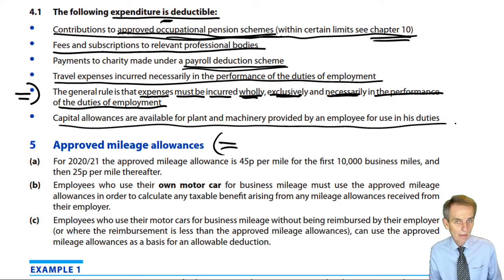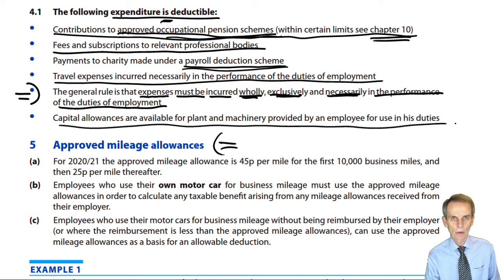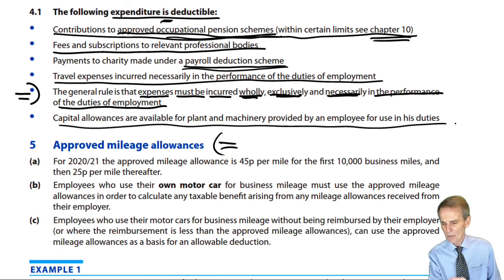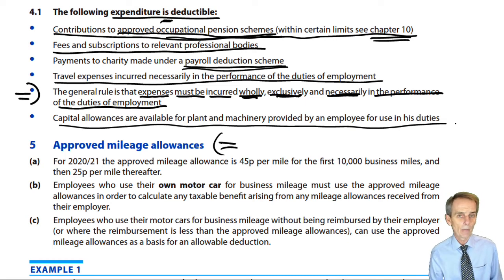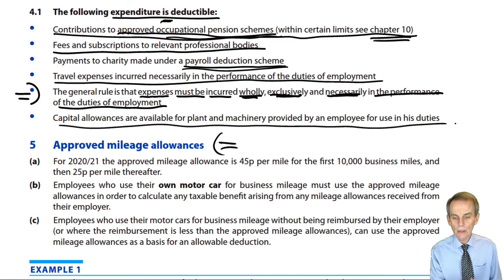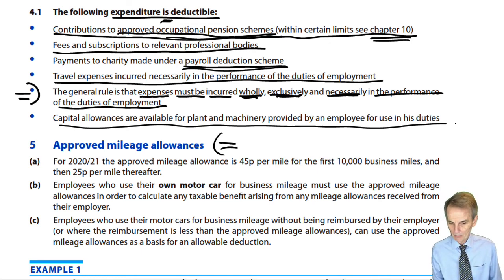We've had an introduction to what we're going to have to deal with in terms of employment income. It's all about finding out what constitutes employment income — not just remuneration, but most specifically benefits, most of which will be taxable and some of which are exempt. And having established the overall gross amount of employment income, what allowable expenses can we as the employee deduct to derive the net employment income assessment? There are probably two or three more lectures to come in relation to this chapter.